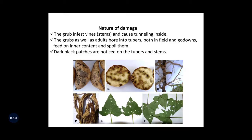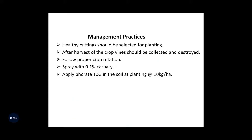Here we can see the different damaging symptoms on the tubers, also on the stems and on the leaves. The management practices are as follows: firstly, healthy cuttings should be selected for planting. After harvest of the crop, vines should be collected and destroyed. Follow proper crop rotation, and also spray with 0.1% Carbaryl. Then apply Phorate 10G in the soil at planting at the rate of 10 kg per hectare.